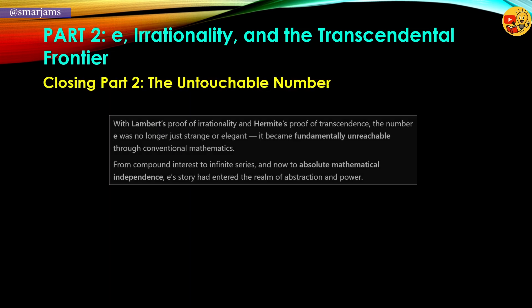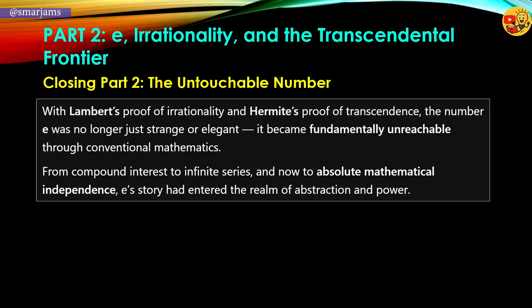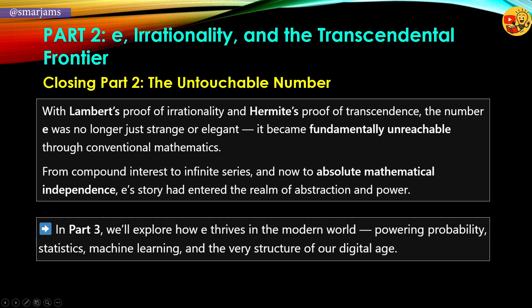So now, with Lambert's proof of irrationality and Hermite's proof of transcendence, e has become something untouchable. No longer just elegant or strange, it is now beyond reach. From finance to infinite series, and now to ultimate mathematical independence, the journey of e has reached a realm where no equation can trap it. In part 3, we'll see how this untouchable number powers modern science, from statistics to artificial intelligence, and shapes the very code of our digital world.